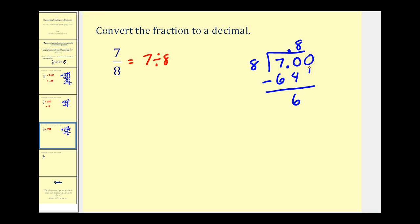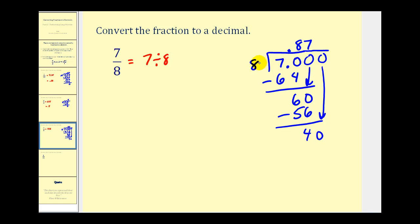We add a zero and bring it down. How many eights in sixty? Seven times eight would be fifty-six. We subtract, giving us four. Add another zero and bring it down. How many eights are there in forty? There are exactly five eights in forty. Forty minus forty is zero, so we're done. Seven-eighths is equivalent to 0.875, or eight hundred seventy-five thousandths.